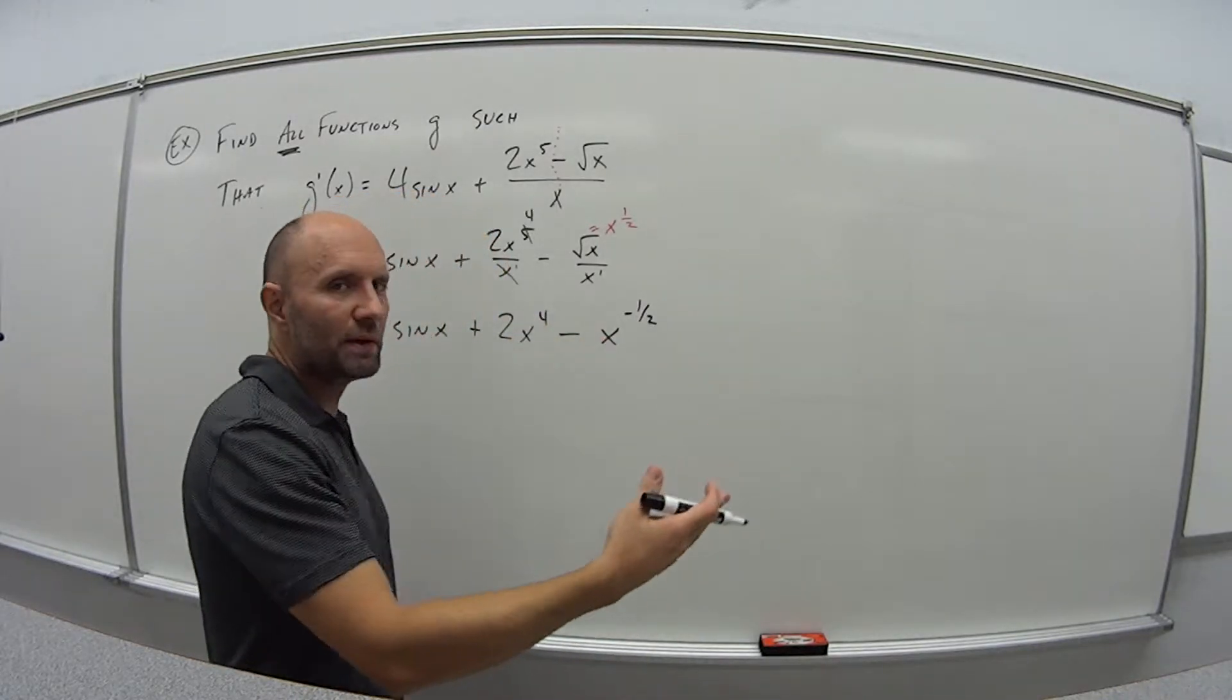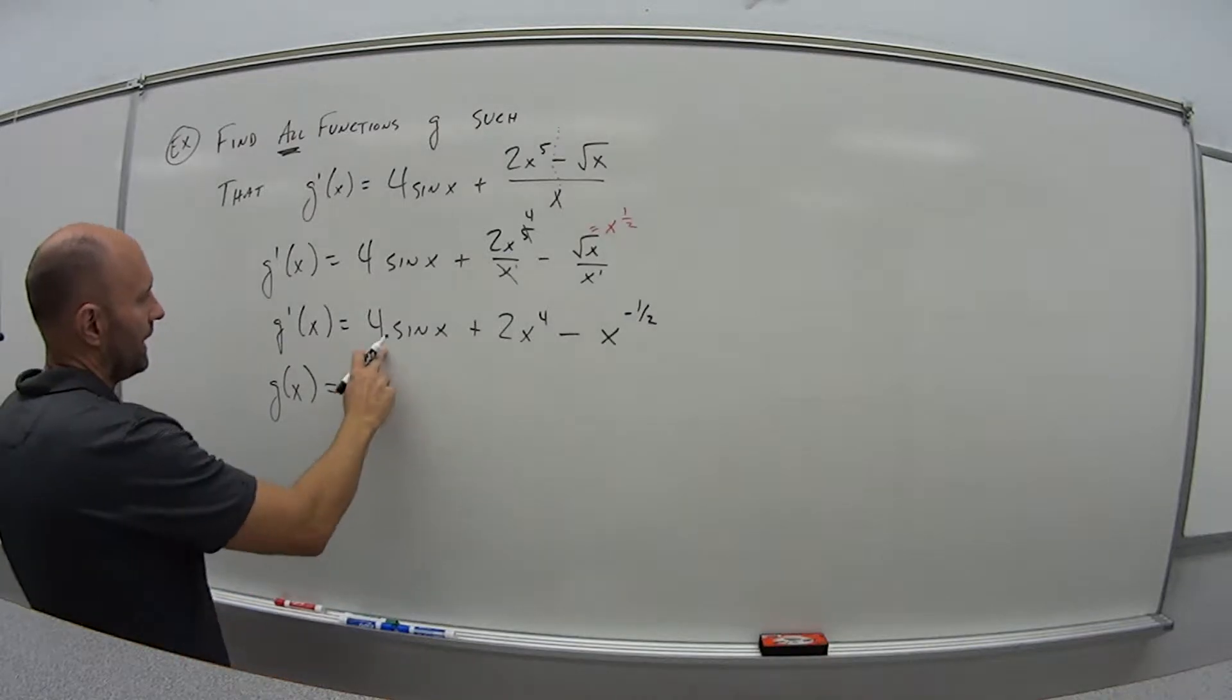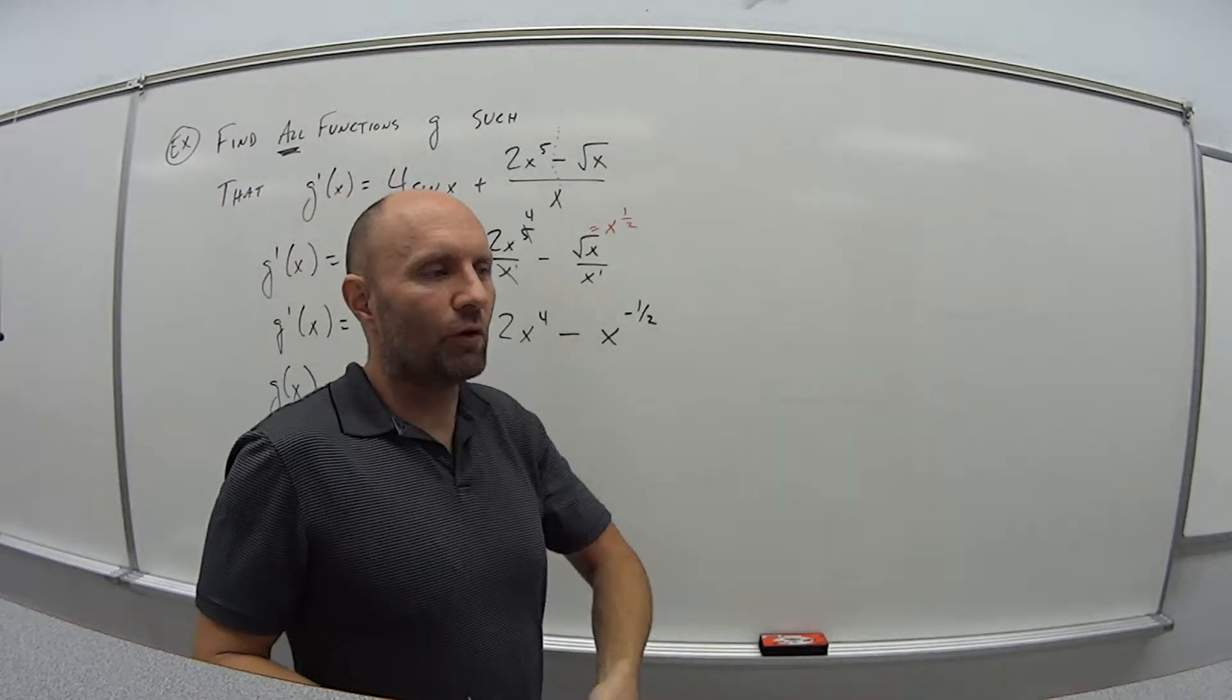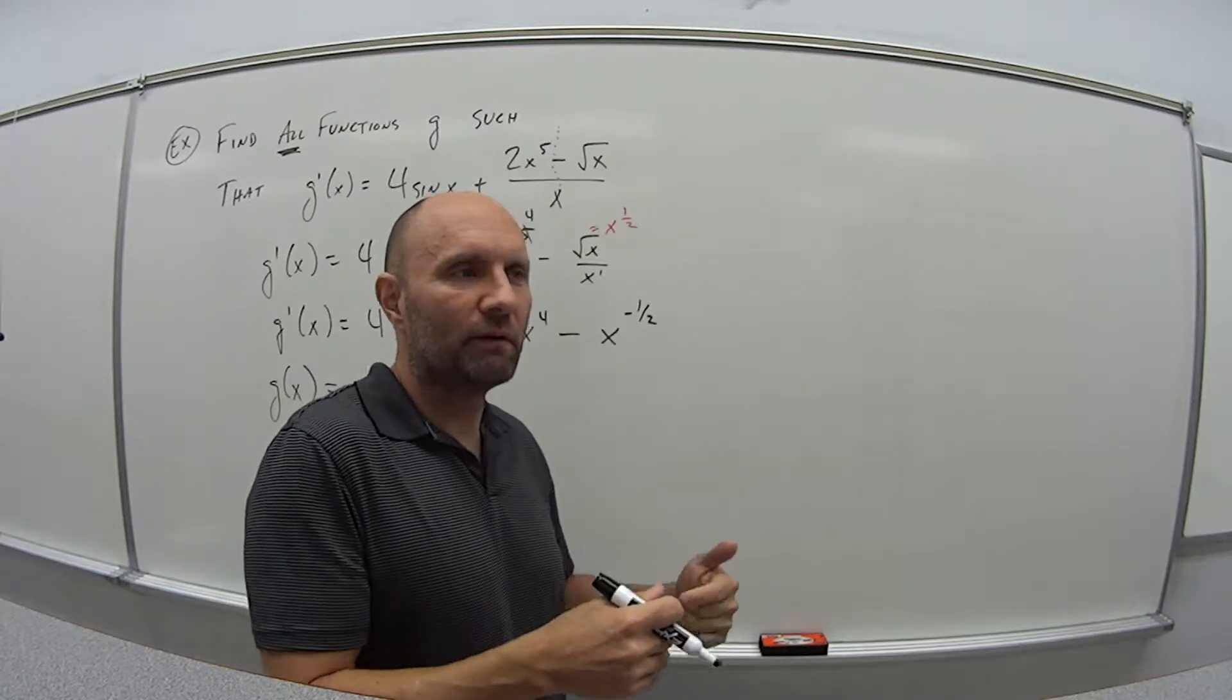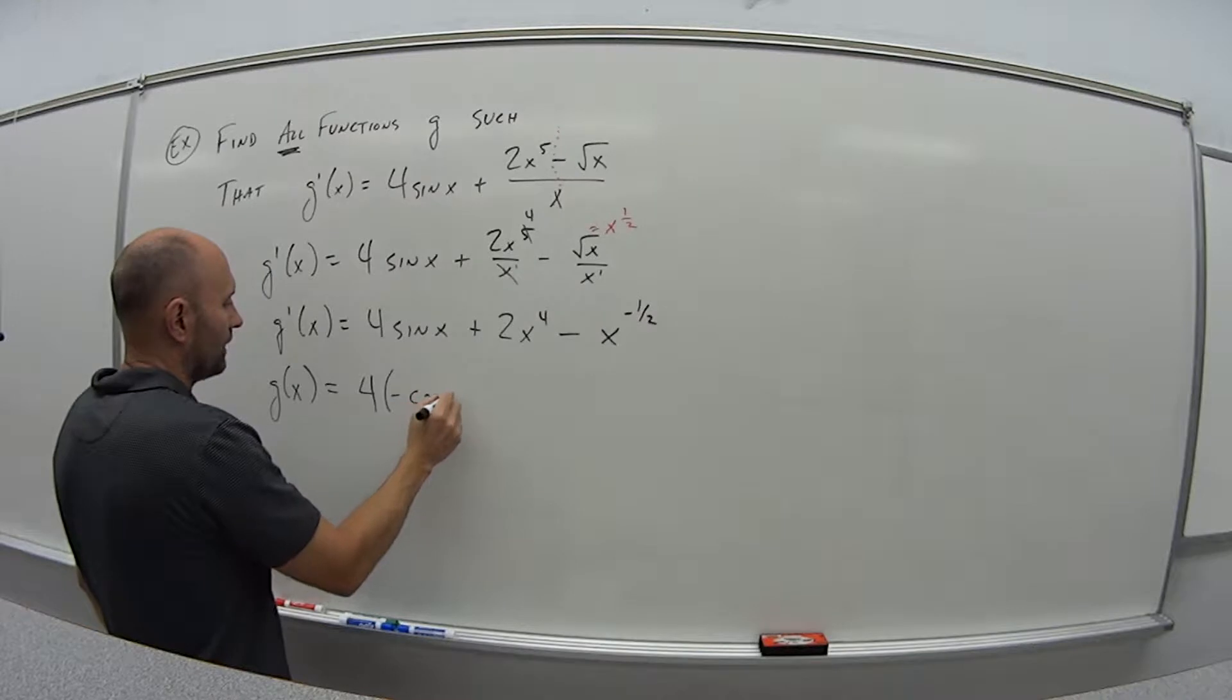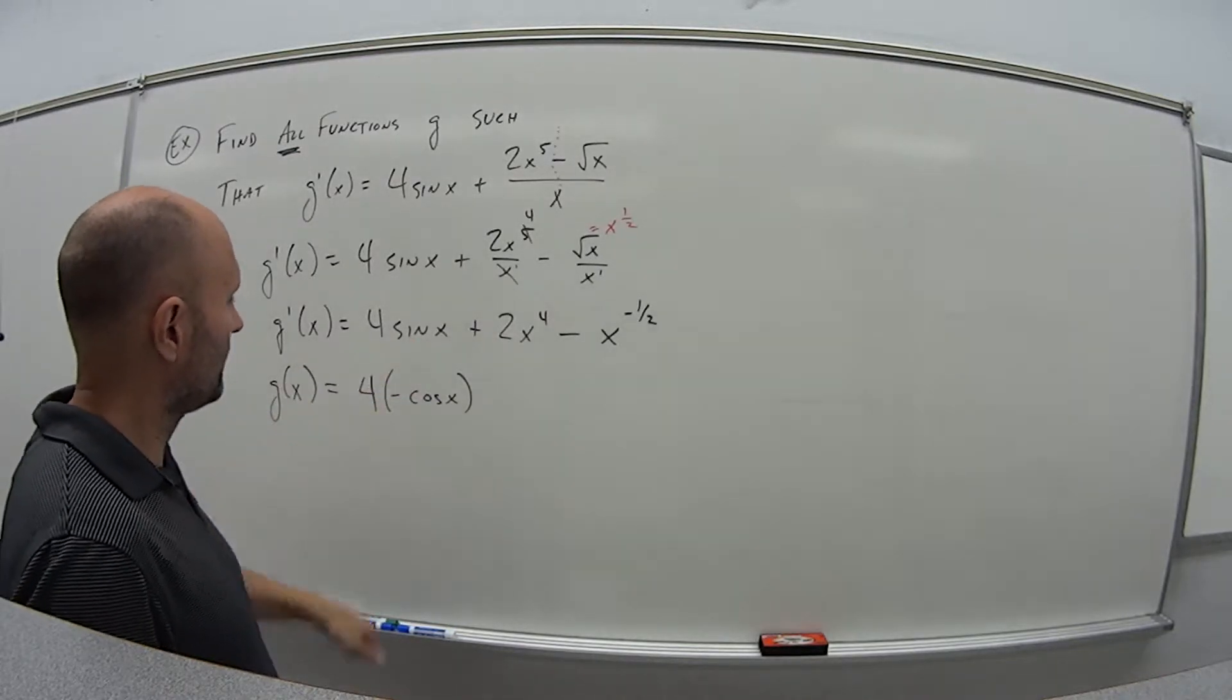Alright, so now I have these three pieces. I'm going to take the antiderivative of each. So that means that g of x, the main function, any derivative of this, so it's going to be 4. What function, if I take its derivative, will give me sine of x? Well, if I have cosine and I take the derivative of cosine, I get minus sine. So that means I need minus cosine of x. When I take the derivative of minus cosine of x, it's minus minus sine of x, which is plus sine of x.